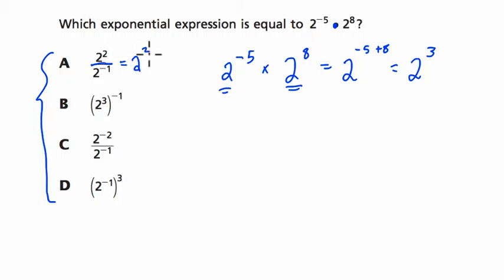But let's look at the other ones. When you have a power raised to a power, like in this case, you multiply the exponents. So this is 2 to the negative 3, or 1 over 2 to the 3rd. Those are equal to each other.